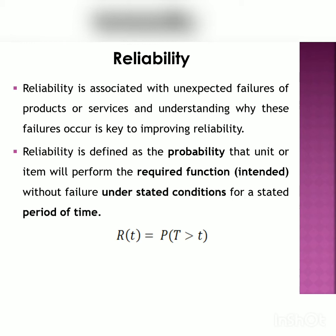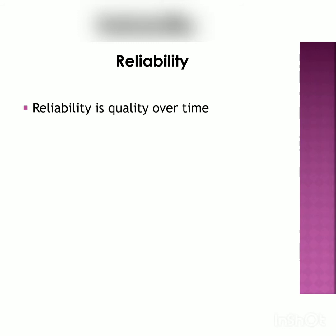As it is denoted by probability, reliability R(t) is equal to the probability with respect to time T being greater than the starting time. If time equals zero, when we start using the product, reliability equals one — that is, 100% probability. When time is infinity, reliability equals zero. Simply put, reliability is quality over time.